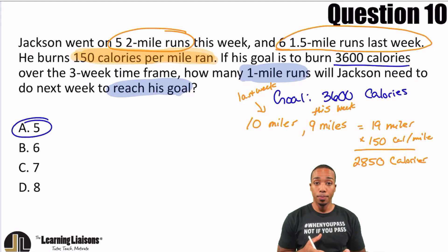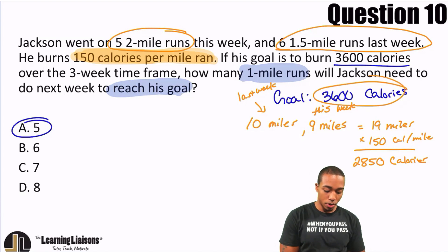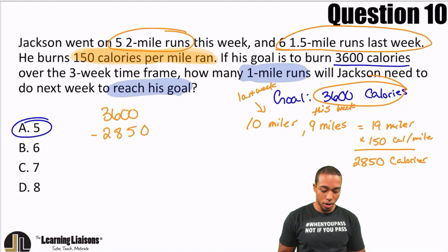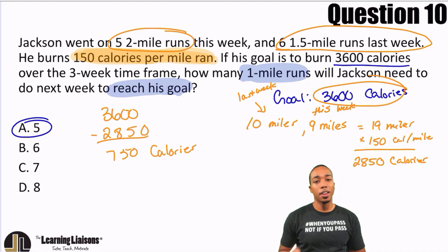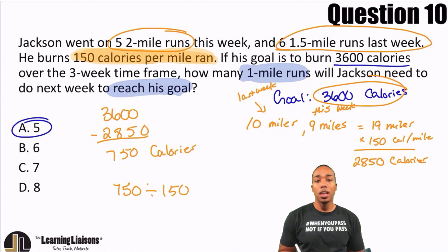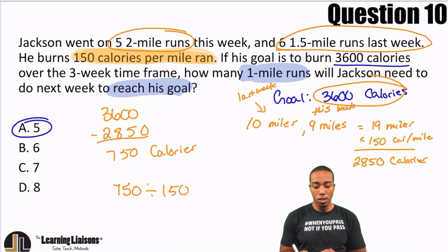So what we're going to do is subtract that from the 3,600. So 3,600 minus 2,850 gives us 750 calories left. Think about it — if every mile is 150 calories, I'm going to divide the 750 by 150, because if we have 750 total calories left and every mile represents 150 calories, divide to see how many miles that is. So 750 divided by 150 is 5.